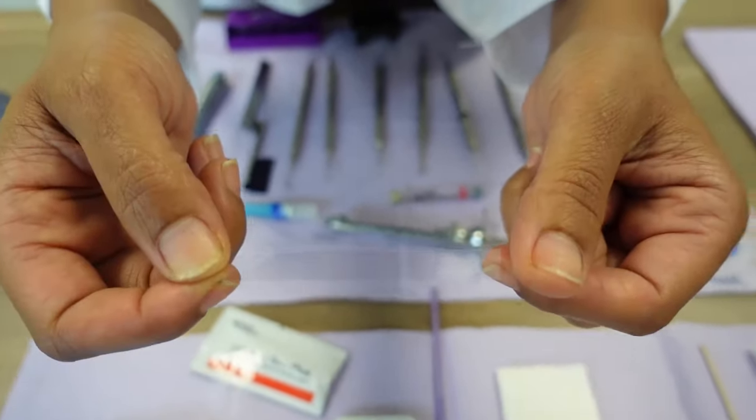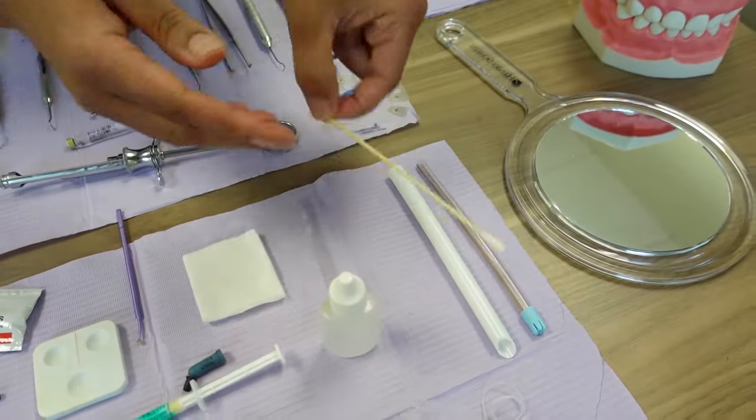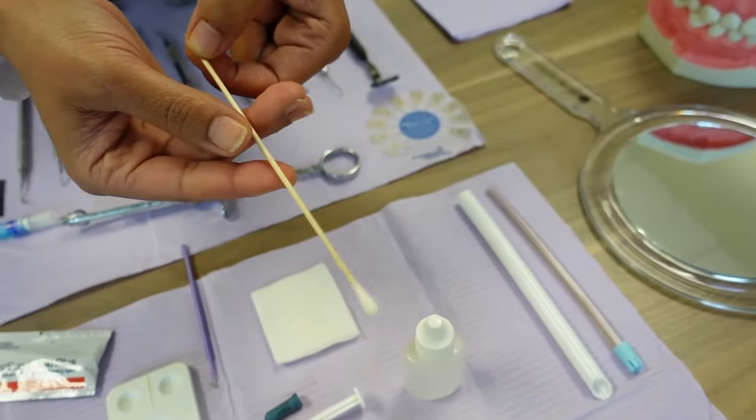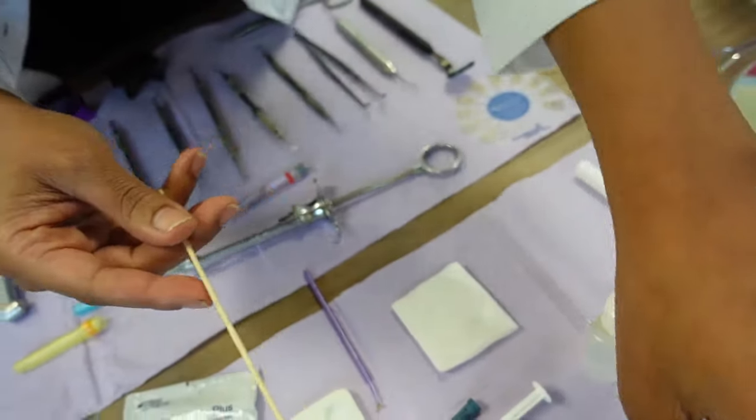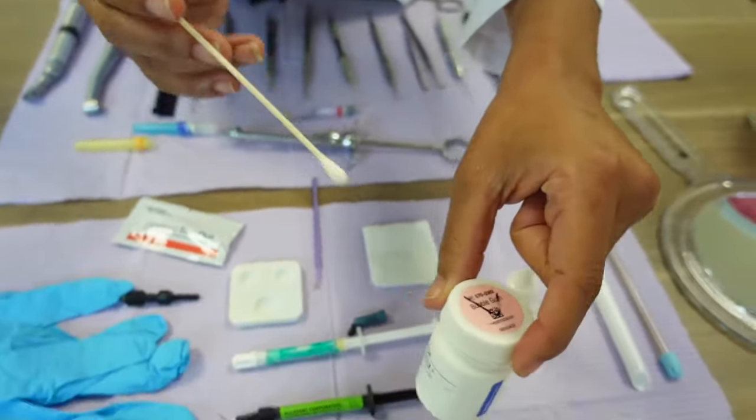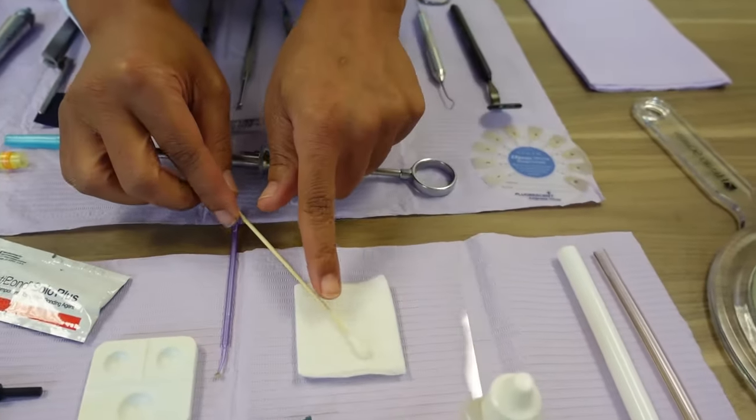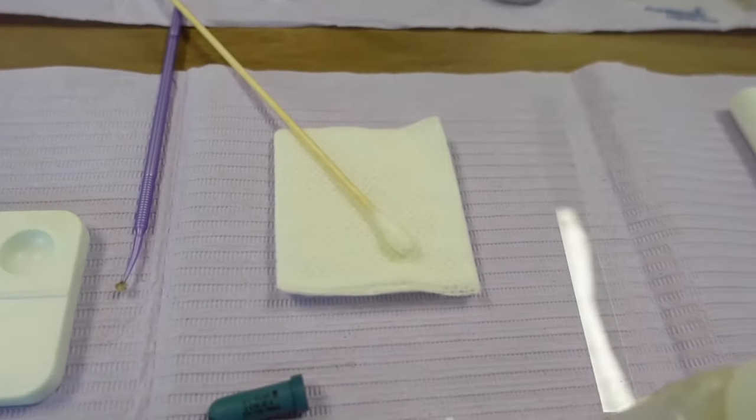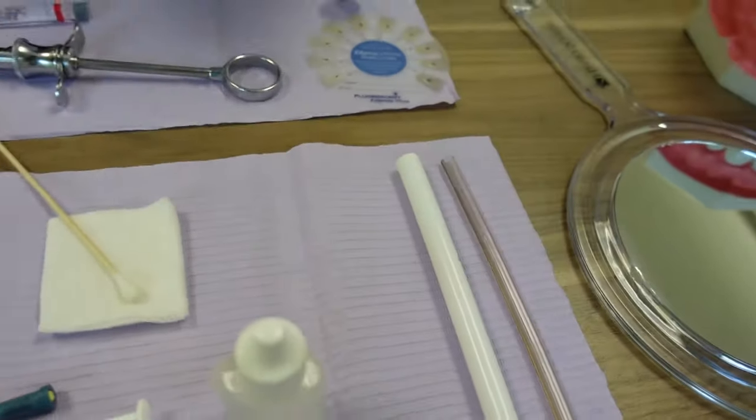This here is a cotton tip applicator. We use that when we're getting ready to set the patient up for anesthesia because we have our topical. We dip it in the topical, sit it on top of a two-by-two gauze, have it set and ready. When the patient comes in, you swab the area that's going to be worked on, and you're good to go.